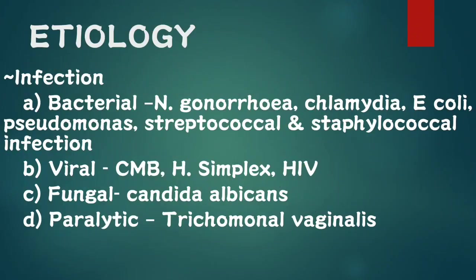Etiology: The main causes of pelvic inflammatory disease are bacterial, viral, fungal, or parasitic infections. Bacterial organisms include Neisseria, E. coli, Pseudomonas, streptococcal, and staphylococcal infections. Viral causes include cytomegalovirus, herpes simplex, and HIV. Fungal causes include Candida albicans. Parasitic causes include Trichomonas vaginalis.